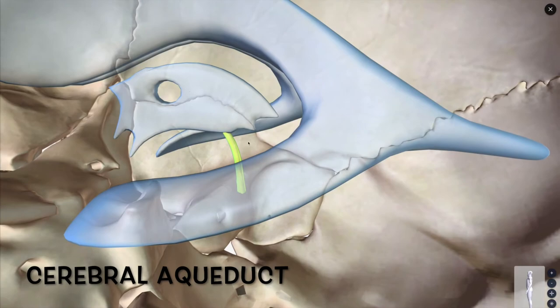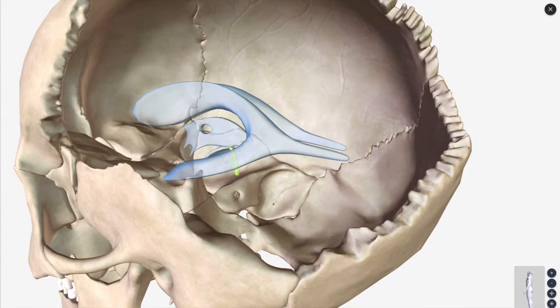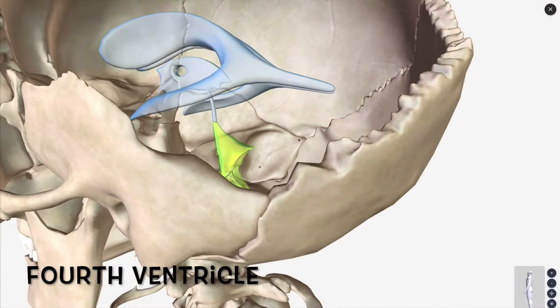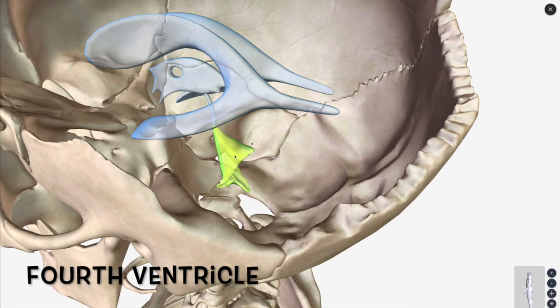At this point we're going to enter the fourth ventricle. The fourth ventricle is down here. When it enters the fourth ventricle, it can then go through three foramen.